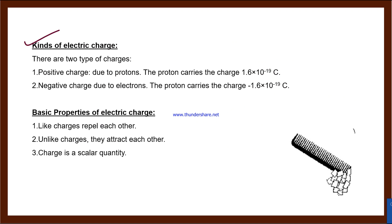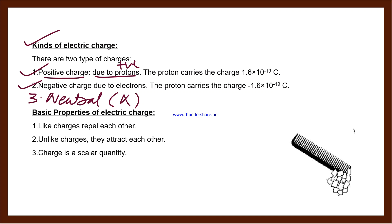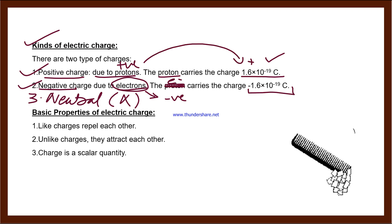Next are the kinds of electric charge. Charge can be positive charge, or negative charge; the third type is neutral — meaning no charge at all. Positive charge is due to protons. Protons are positively charged. A proton carries a charge of +1.6 × 10⁻¹⁹ Coulomb. Negative charge is due to electrons. Electrons are negatively charged. An electron carries a charge of −1.6 × 10⁻¹⁹ Coulomb. A neutral object is one in which the number of protons equals the number of electrons, so there is no net charge.